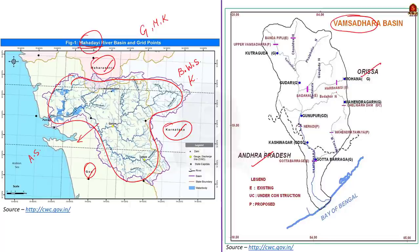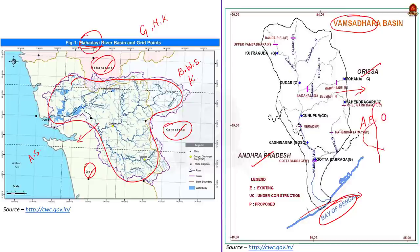River Vamsadhara is an east-flowing river — it flows eastward and drains into the Bay of Bengal. It originates in Kalahandi district of Odisha. After flowing through Odisha, it flows along the boundary between Odisha and Andhra Pradesh, then through Andhra Pradesh, and finally drains into the Bay of Bengal.